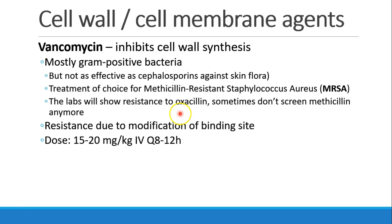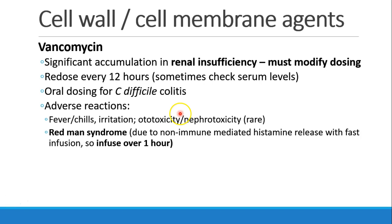The dose of vancomycin is 15 to 20 milligrams per kilogram, given IV every 8 to 12 hours. In patients who have renal insufficiency, vancomycin will accumulate, so we have to be careful with dosing — usually every 12 hours. We often check a vancomycin trough level before redosing to make sure levels have fallen low enough. Vancomycin can also be given orally, in which case it doesn't get absorbed well into the bloodstream, but it treats Clostridium difficile colitis in the GI tract. Common adverse reactions include fever and chills, irritation, and more rarely ototoxicity or nephrotoxicity. Red Man syndrome is a non-immune-mediated histamine release that occurs more with fast infusion, so we should give vancomycin over at least an hour.